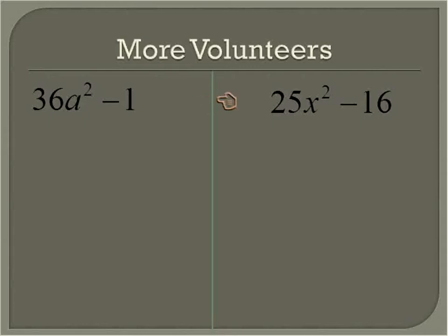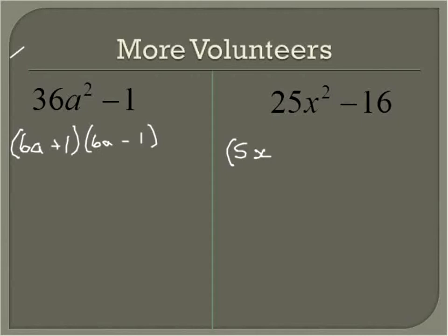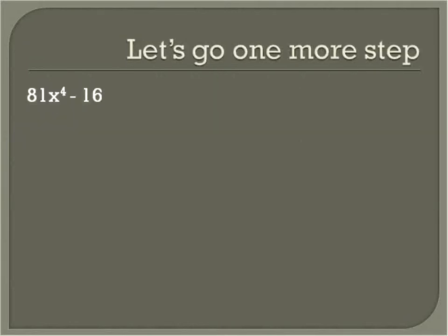Pause the recording, take a look, and see if you can solve these before I do them. The square root of 36 is 6, the square root of a squared is a, the square root of 1 is 1. Then we take the square root of the first term minus the square root of the second. Next: the square root of 25x squared is 5x, plus the square root of 16, then the square root of the first minus the square root of the second.